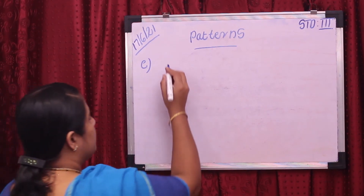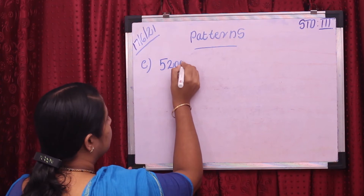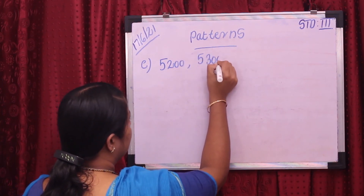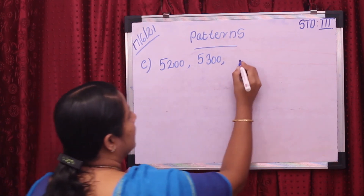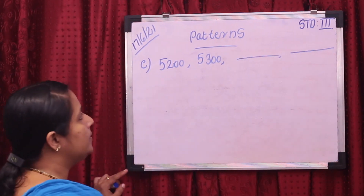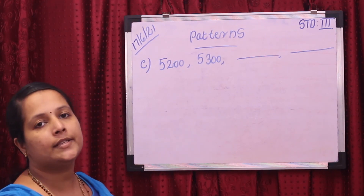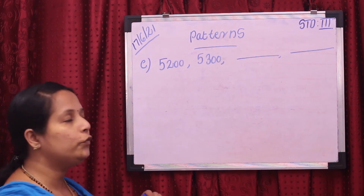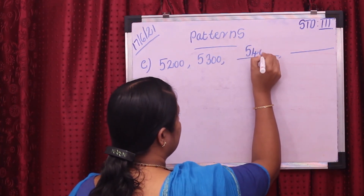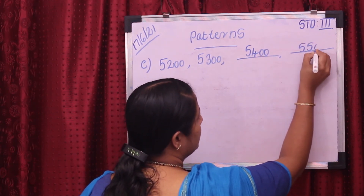Then our next pattern: given the question is 5,200, next is 5,300, then dash dash. So 5,200, 5,300, then next value is 5,400, then 5,500.